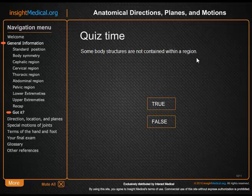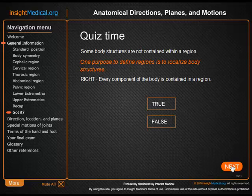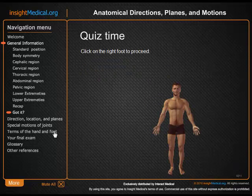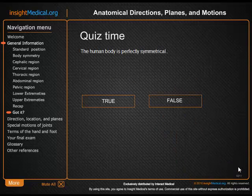Some body structures are not contained within a region. Let's say that's true, and it says one purpose to define regions is to localize body structures, so it must be false — and it is. And then here we have to click on the right foot to proceed. Many beginners click on this foot because it's on their right, but we learn that left and right are always defined with respect to the patient.